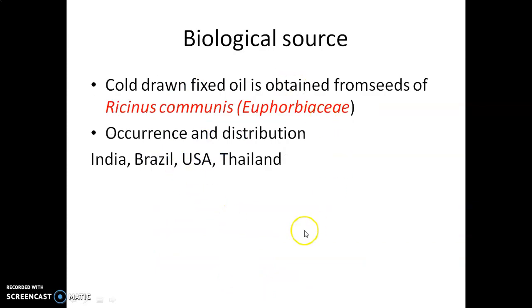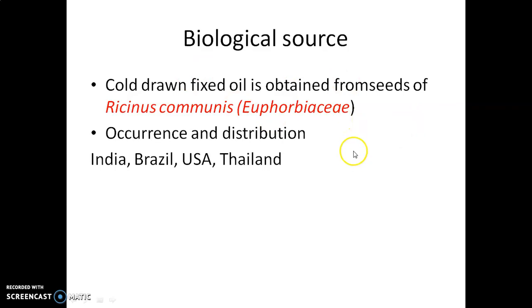Castor oil is a cold-drawn fixed oil obtained from the seeds of Ricinus communis, belonging to the family Euphorbiaceae. Major castor oil production happens globally in India and Brazil. Apart from this, castor oil can also be obtained from the USA and Thailand.